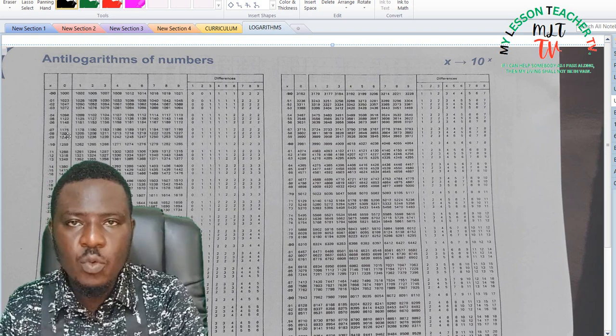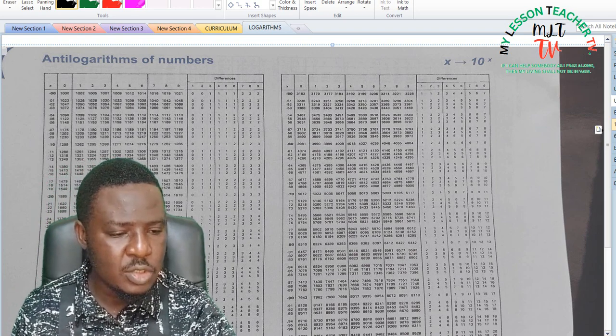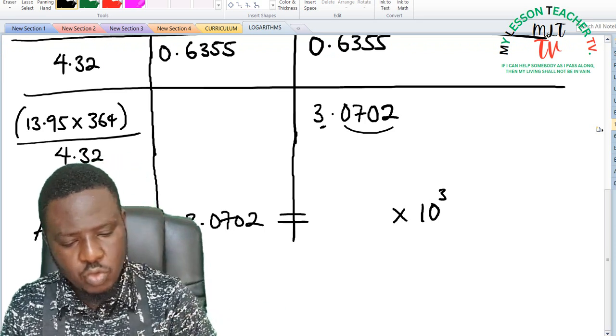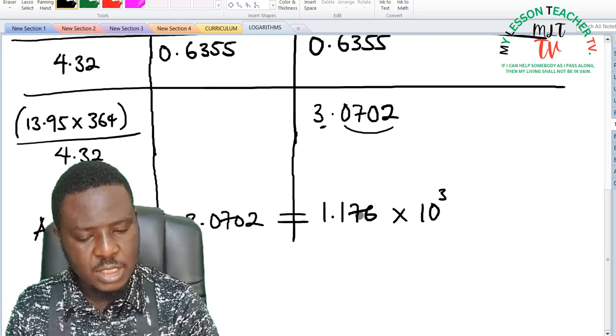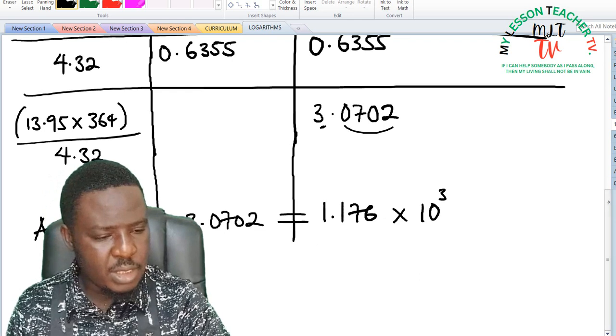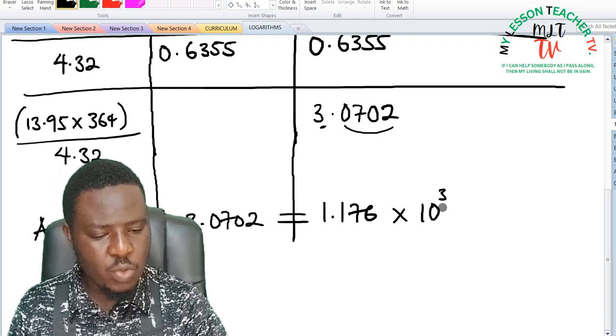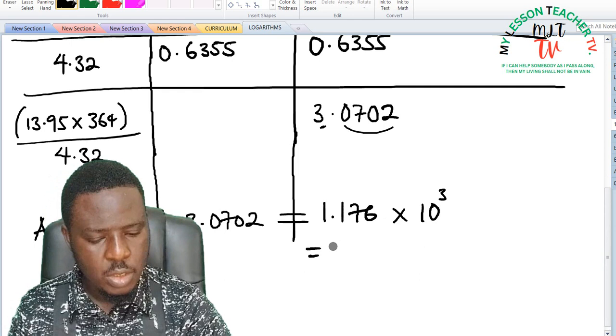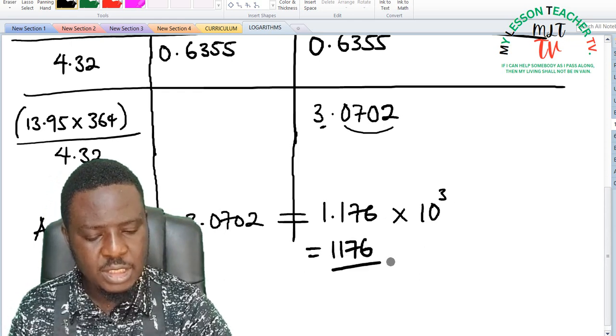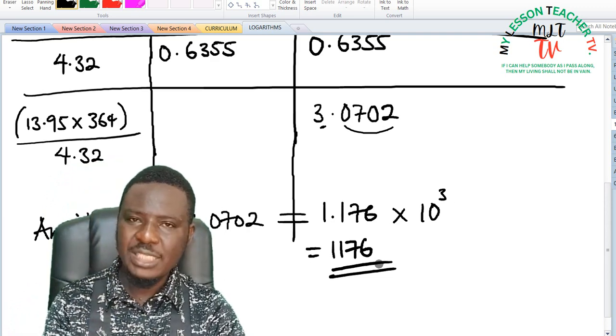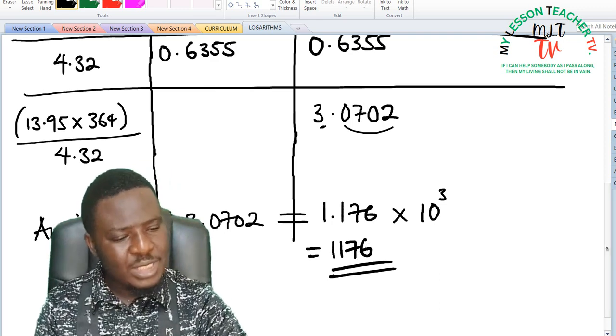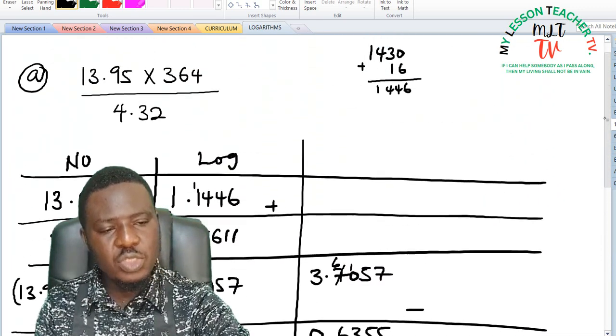So our answer is said to be 1176. Now expressing this in number, this is going to be equal to 1176. So this is our answer. If you use your calculator to do this in numbers you are going to arrive at this, but this is the way to do it using logarithm table.